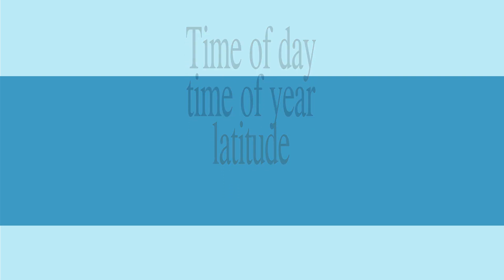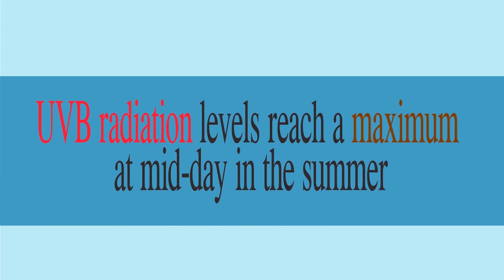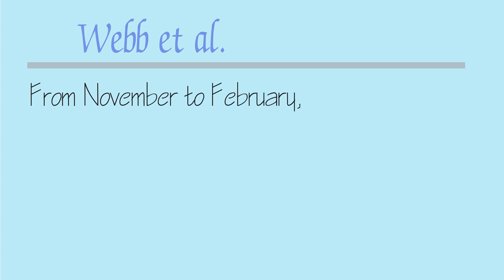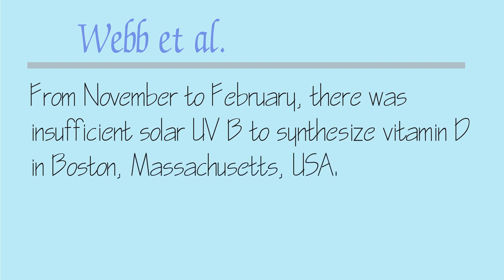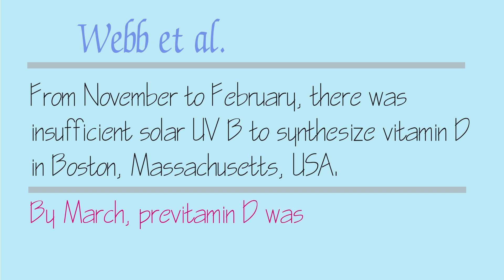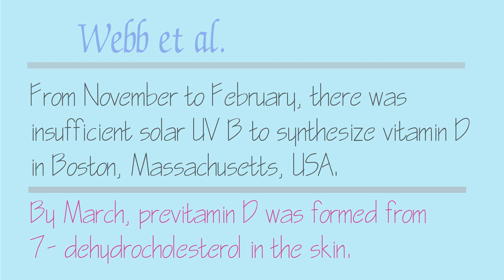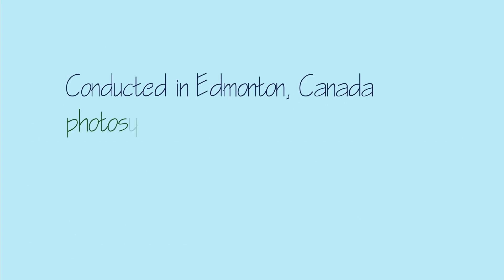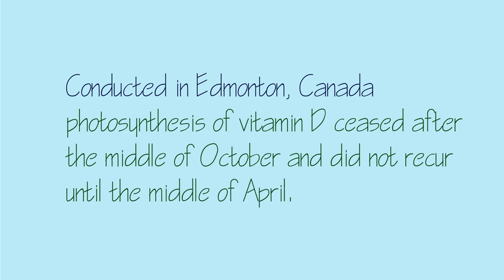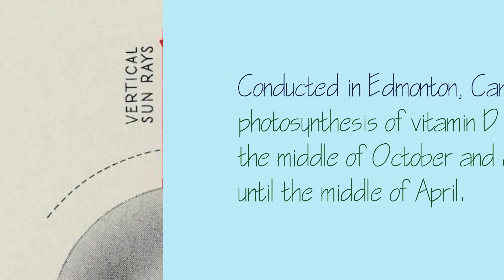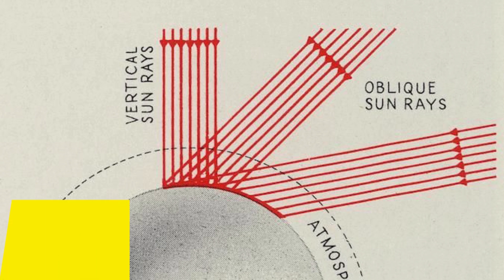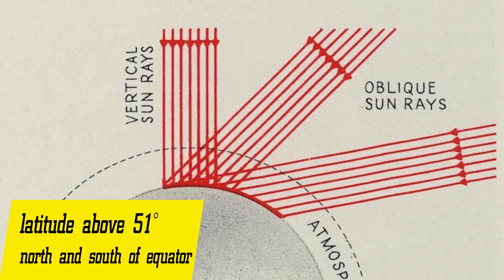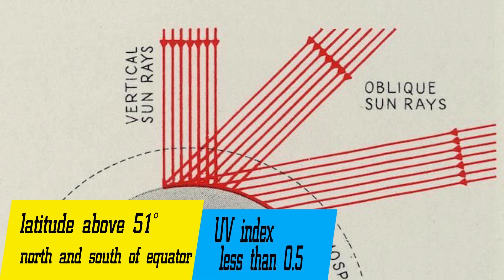In general, incident UVB radiation levels reach a maximum at midday in summer. A study done by Webb and his co-authors showed that from November to February, there was insufficient solar UVB to synthesize vitamin D in Boston, Massachusetts, USA. But by March, pre-vitamin D was formed from 7-dehydrocholesterol in the skin. A similar study conducted in Edmonton, Canada, found that photosynthesis of vitamin D ceased after the middle of October and did not recur until the middle of April. This happens due to the increase in solar zenith angle in winter, as the Sun angle becomes more oblique. As a result, for latitudes above 51 degrees north and south of the equator, the UV index is less than 0.5 in winter months.